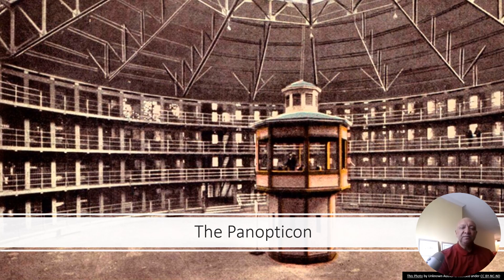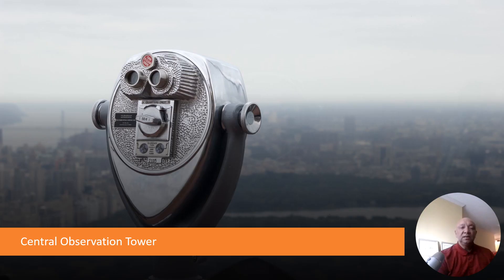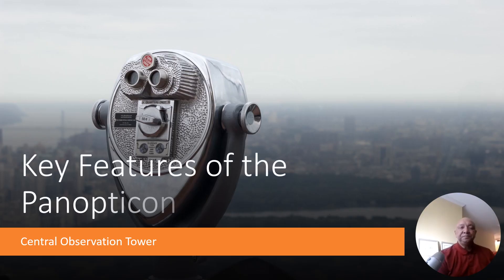As you can see from the picture, the central observation tower and the circular architecture of the prison system means that every prisoner feels they are being watched from the central cell, efficiently, by a single warden. The central observation tower is located at the center of a circular building, allowing a single guard to observe all inmates or residents without being seen.